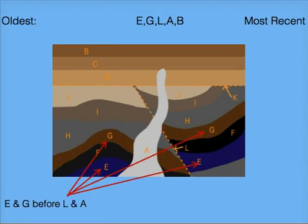Both the fault and the volcanic intrusion pass through layers E and G. We therefore know that layers E and G were in place before the fault and volcanic intrusion, giving us E, G, L, and A.